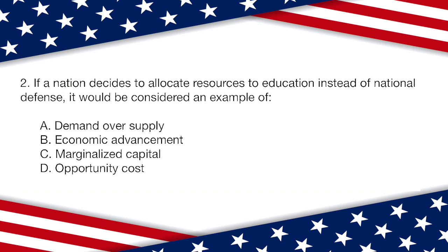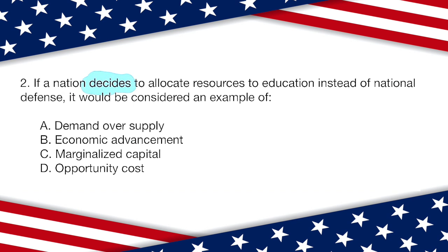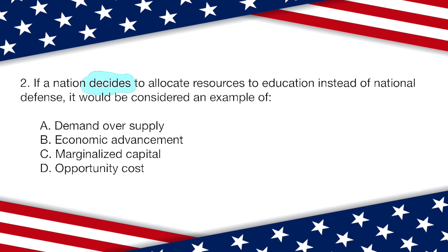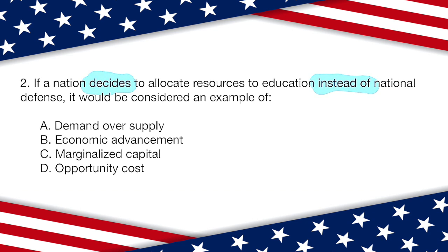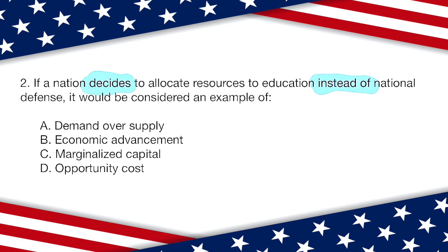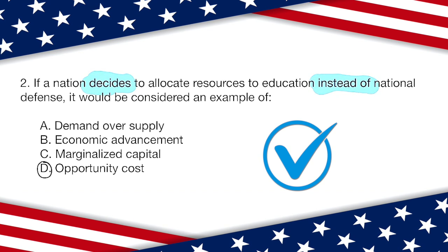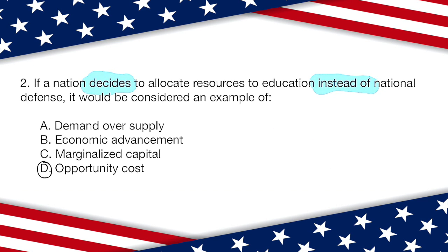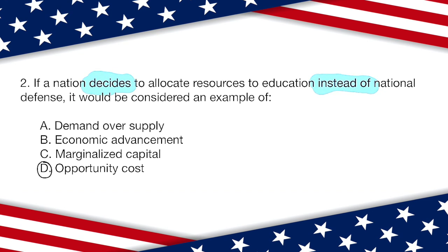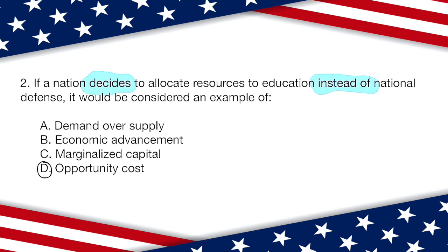The nation is deciding to allocate resources to education instead of national defense. Out of these four options, this best describes option D, opportunity cost. They are deciding to put those resources in one area — in this case education — versus another one, which is national defense. All of the other options just don't make sense in this context.